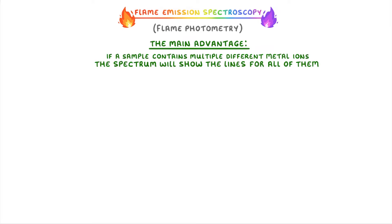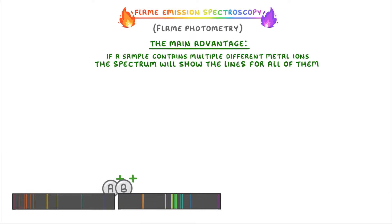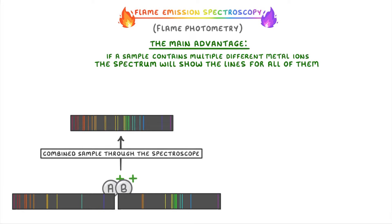For example, if we mixed metal ion A, which has this line spectrum, with ion B, which has this one, and we ran the combined sample through the spectroscope, then we'd get this spectrum, which is basically the line spectra for the ions A and B combined, and so contains all of the wavelengths of both of them.